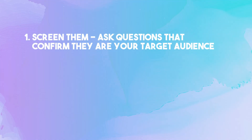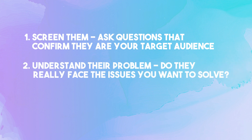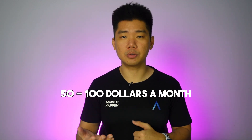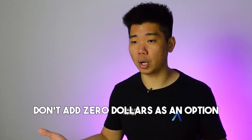You need to find a way to speak to people one-on-one. When you talk to them, cover three things. First, screen them — ask questions that confirm they are your target audience. Second, understand their problem — do they really face the issue you want to solve? Third, determine their commitment level — ask how much they'll pay for an app-based solution. I recommend giving options in the form of ranges: $50 to $100 a month, $100 to $150 a month, and so on. Don't add $0 as an option; if it's really $0, they'll tell you. Aim for no less than five quality interviewees who validate your theory, and get them on a list to be your future product testers — saves you the trouble of finding new people later.